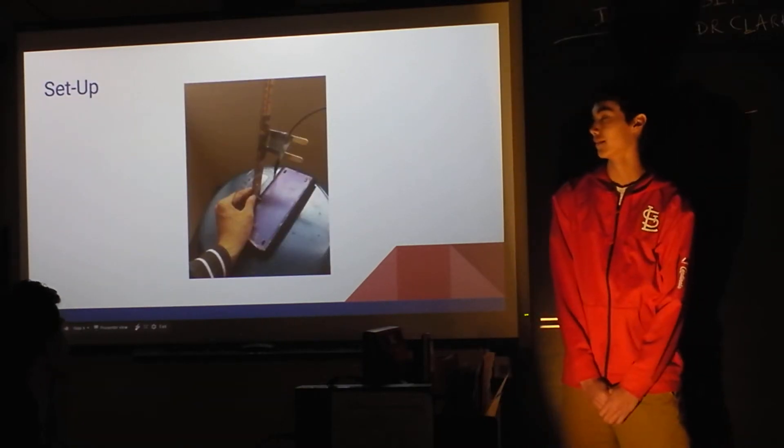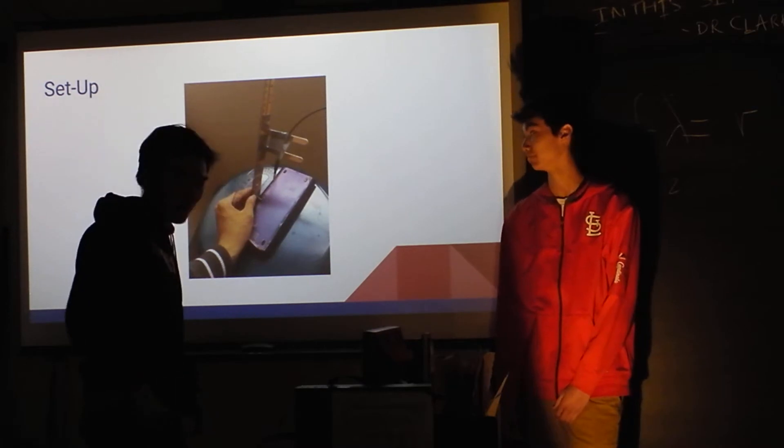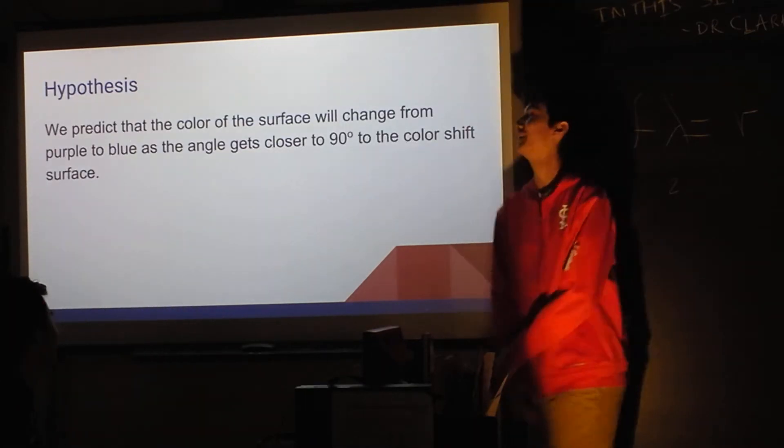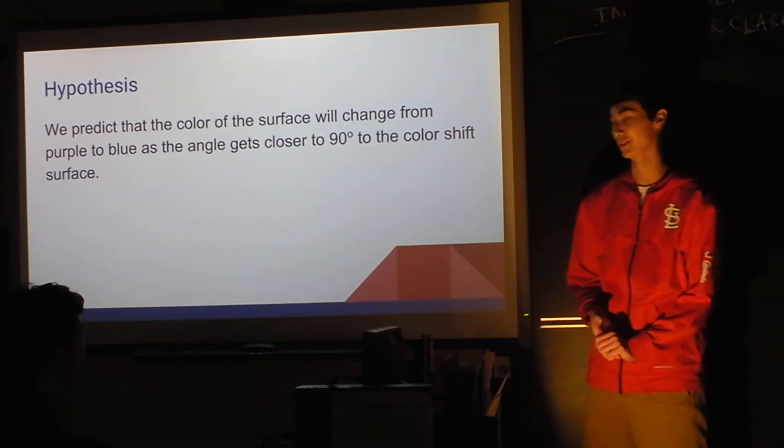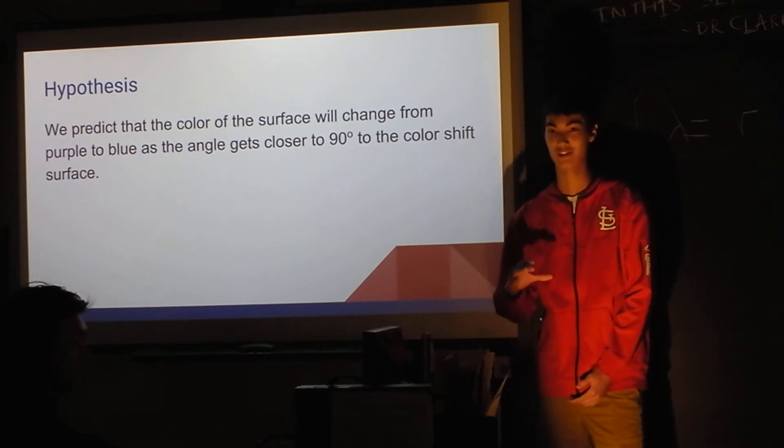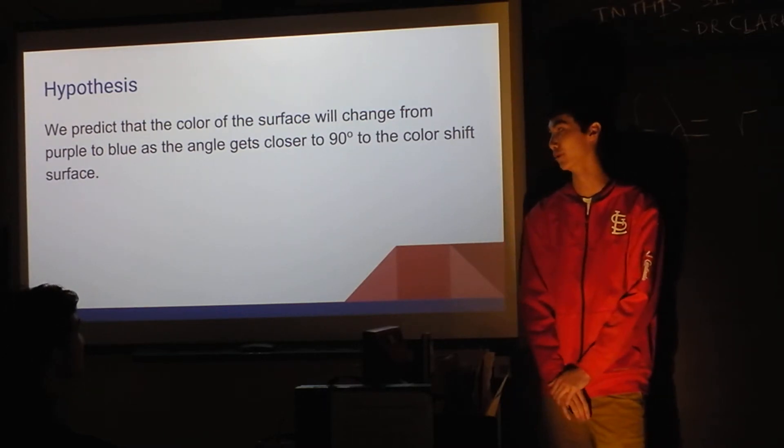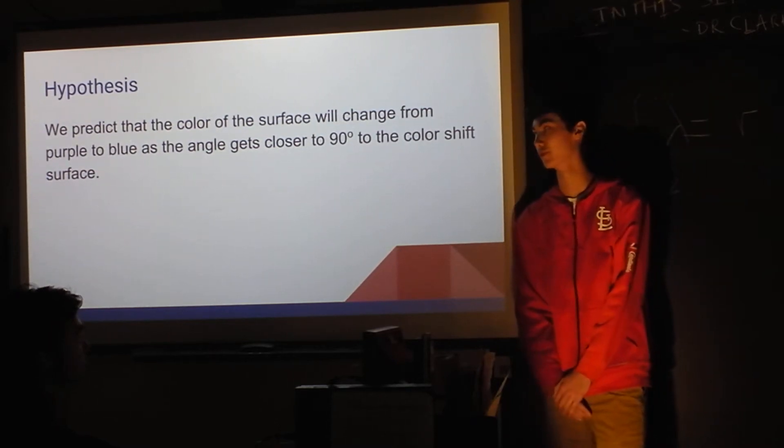That's our setup and that's spectrometer. We predicted that basically the color would change as we change the angle. And just by observing, we saw that as you look directly over it at 90 degrees, it would look blue. So we predicted the wavelength would get closer towards blue as we move towards 90 degrees.